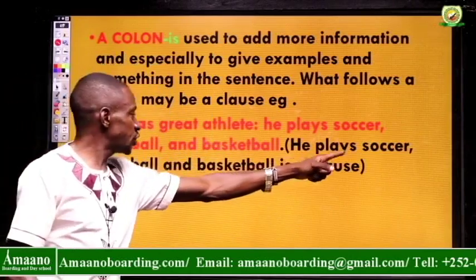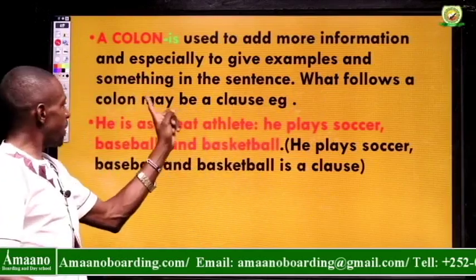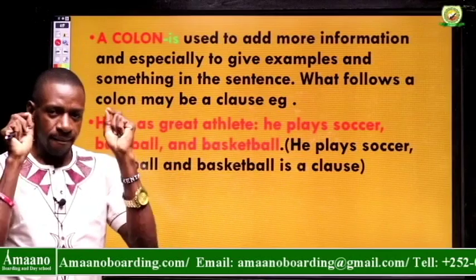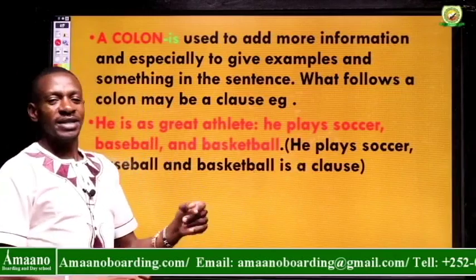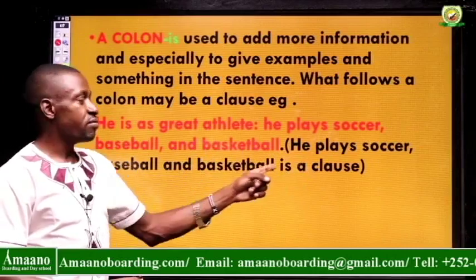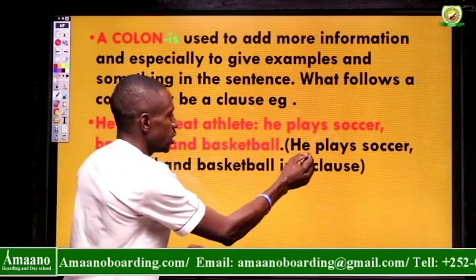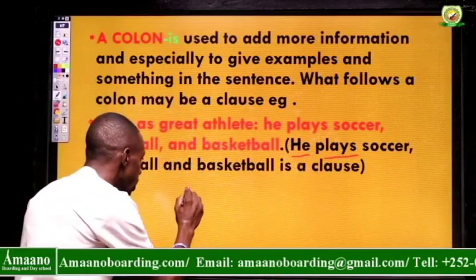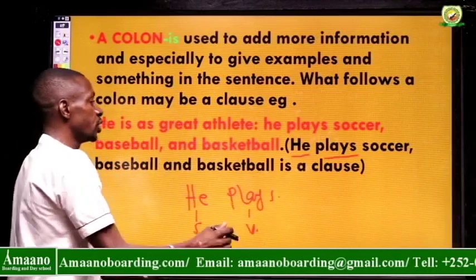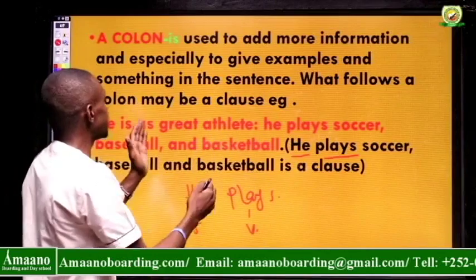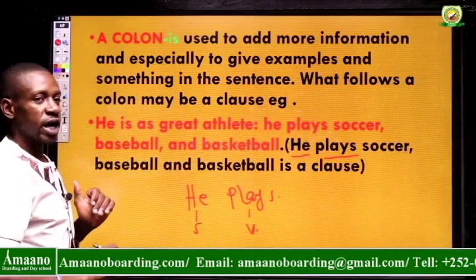When you look at this sentence — 'he plays soccer, baseball, and basketball' — it is a clause because it has a subject and a verb. 'He' is the subject and 'plays' is the verb. So the full sentence 'He is a great athlete: he plays soccer, baseball, and basketball' is a complete English sentence that has already been combined to that given effect.